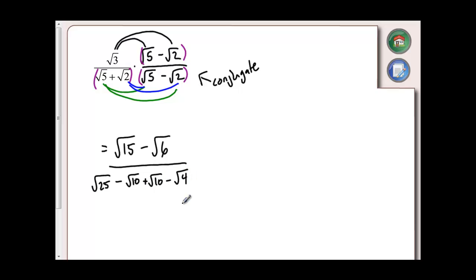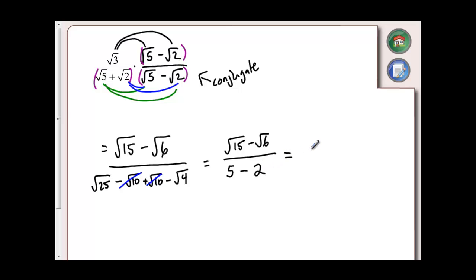Now I need to reduce anything I can. Root 15 and root 6 are fine — they can't be reduced. The square root of 25 is just 5. Root 10 and minus root 10 cancel out, and the square root of 4 is just 2. So my numerator stays the same, and my denominator reduces to 5 minus 2, which is 3.